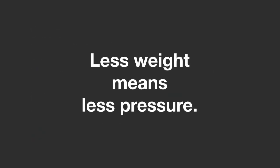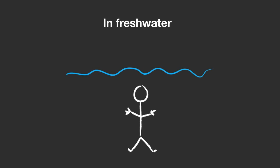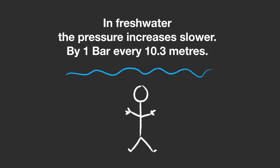Less weight means less pressure. So in freshwater, the pressure increases more slowly, by 1 bar every 10.3 meters instead of every 10 meters.